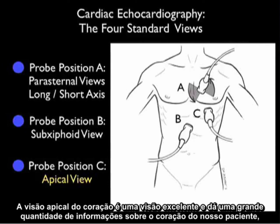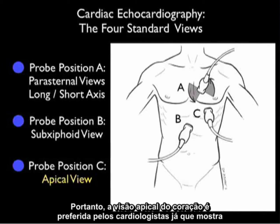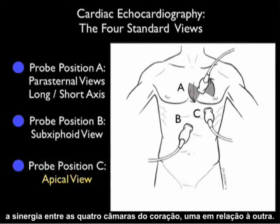The apical view of the heart is an excellent view and gives a great deal of information about our patient's heart, as it shows all four chambers of the heart in relation to one another. Therefore, the apical view is preferred by cardiologists, as it shows the synergy of all of the chambers of the heart to one another.